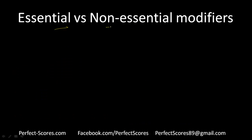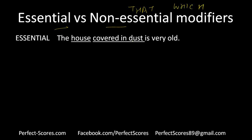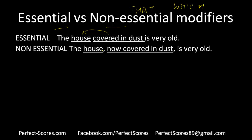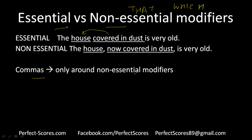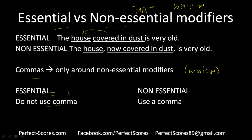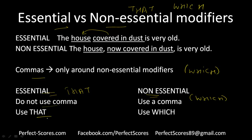The difference between essential versus non-essential modifiers — basically the difference between that and which. 'The house covered in dust is very old' — covered in dust is an essential modifier needed for meaning, no commas used, and that is appropriate. 'The house, now covered in dust, is very old' — with commas it becomes non-essential. Rule: that is used when there is no comma; which is used when there is a comma, and which always refers to the noun just before it.